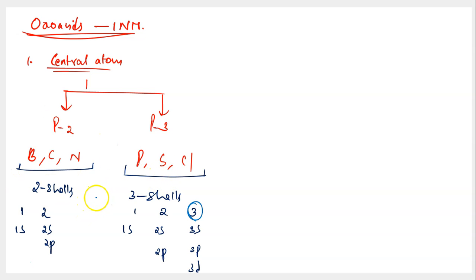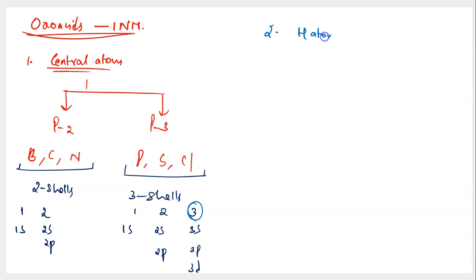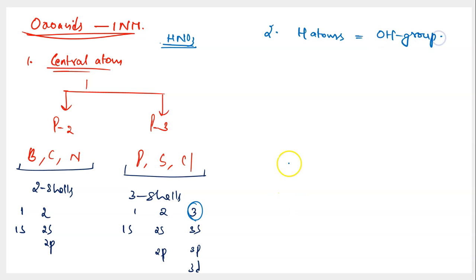We look at the central atom to understand hybridization: for period 2 elements, only sp² or at most sp³ hybridization is possible, while for period 3 elements, d-orbital involvement in hybridization is also possible. Rule number two: observe the number of hydrogen atoms in the formula. The number of hydrogen atoms is always equal to the number of hydroxy (OH) groups present in the structure. For example, HNO₃ has one hydrogen, so it has one hydroxy group. If there are four hydrogen atoms, four hydroxy groups are present.